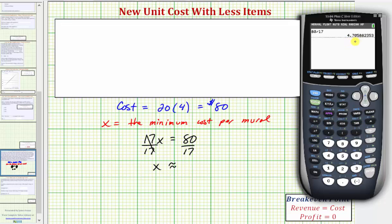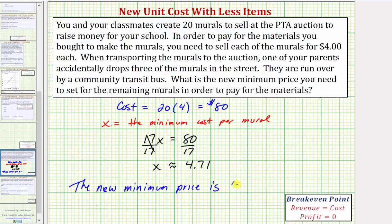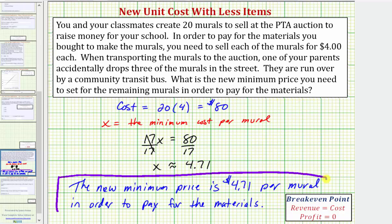Or $4.71. So x is approximately 4.71, which means the new minimum price is $4.71 per mural in order to pay for the materials. I hope you found this helpful.